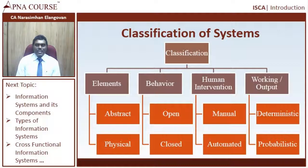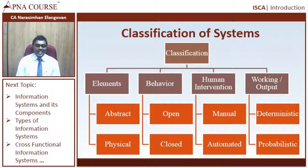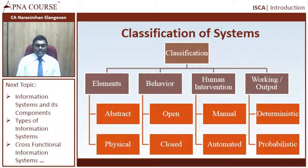Now, why is this classification important? As an auditor, you need to understand that each of the systems behaves in a different manner. To give a simple example, if it is an open system, this means it interacts with the live environment — meaning it interacts with the world with the help of tools such as the internet. Interacting with the internet makes it prone to higher risk, and higher risk obviously results in higher careful consciousness measures which you will have to take care of. Let us spend some time to understand each of these classifications. This is also a frequently asked examination question for students.